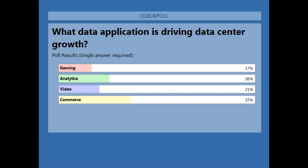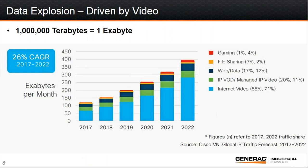It looks like we had a winner with commerce at 37%, and analytics came in second at 26%. My question may be a little unfair because the data I'm going to show you really has to do with the gross amount of data flowing across the internet. In my mind, the data center is managing and serving up that data — and the huge consumer of data is video. Video has really become the super app that's driving the explosive growth on the data side of things. To put it in perspective, they're looking at traffic numbers up at 300 exabytes — a million terabytes is one exabyte — and the order of magnitude that internet video is now driving is really powering some of that explosive growth.